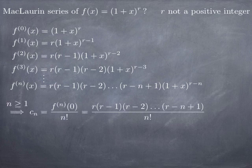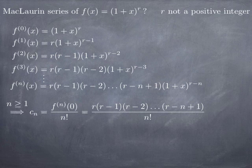Therefore, at least when n is greater than or equal to 1, the nth coefficient in the Maclaurin series is the value of the nth derivative at 0 divided by n factorial. If we plug x = 0 into the formula for the nth derivative, we get just 1 for (1+x)^(r−n), since any power of 1 is 1. So we end up with the product of n terms r(r−1)(r−2)···(r−n+1) divided by n factorial.